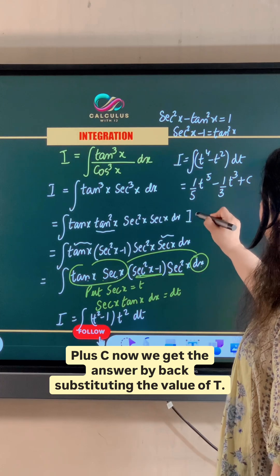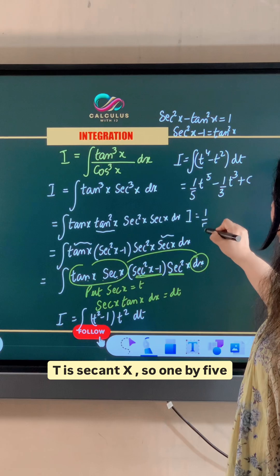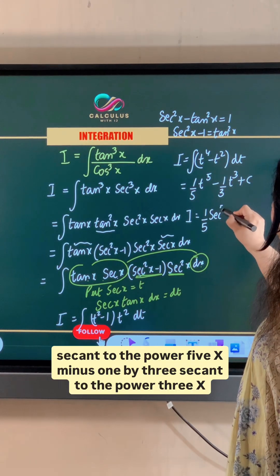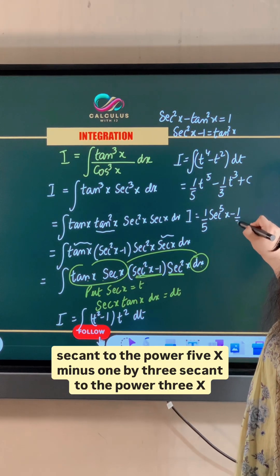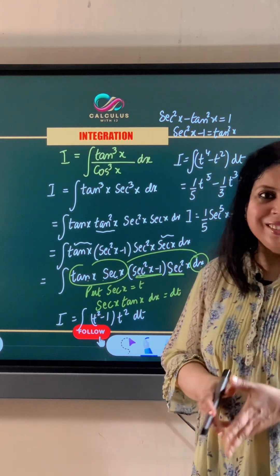Now we get the answer by back substituting the value of t. t is secant x. So 1 by 5 secant to the power 5 x minus 1 by 3 secant to the power 3 x plus c is the answer.